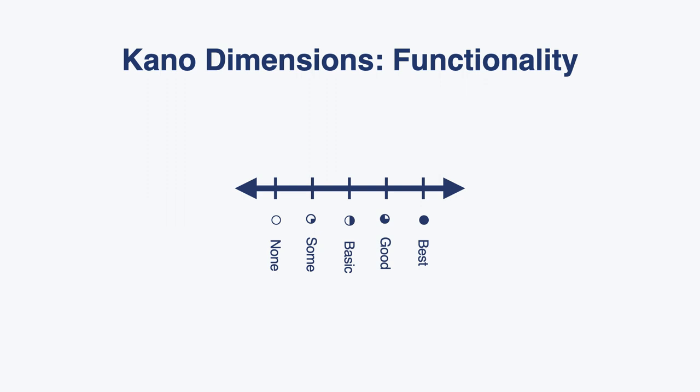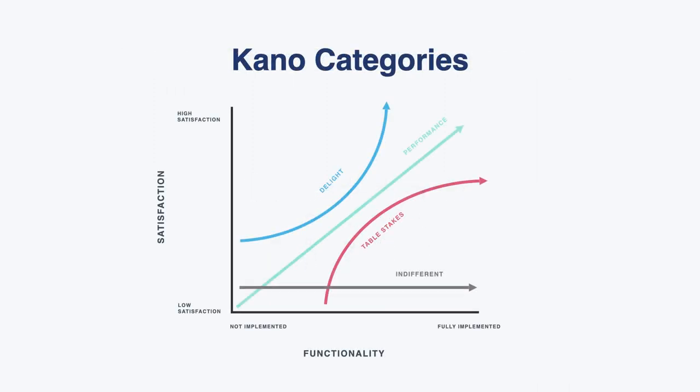The second dimension is the functional axis, represented on the horizontal axis. As you go across, you have more and more of the feature implemented — it's faster, more performant, has a bigger catalog, whatever that linear effect is. Think of it as: the more you invest in that feature, the more robust and fully functional it is. Going in the other direction, it's less functional — not implemented at all, partially implemented, or just bare-bones MVP.